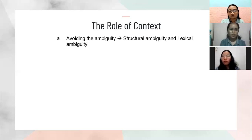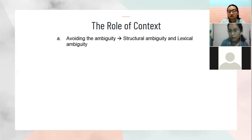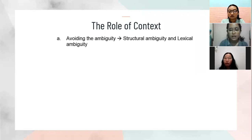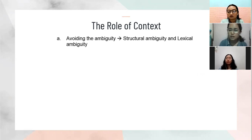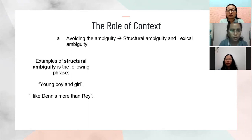Now we jump into the role of context. In linguistics, especially discourse, context has certain roles or functions when used. The first one is avoiding ambiguity. In any utterances or text, we as readers may interpret a word, phrase, or sentence with the possibility of double meaning — which is called ambiguity. Therefore, context is very important to avoid disambiguation, so that the listener or reader doesn't misinterpret the meaning. According to Song (2010), there are two types of ambiguity: structural ambiguity and lexical ambiguity.